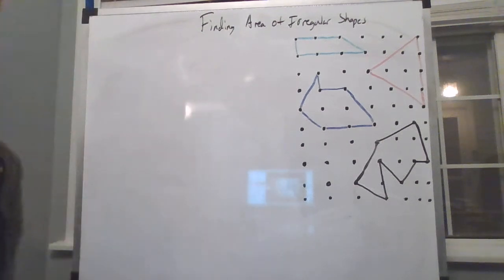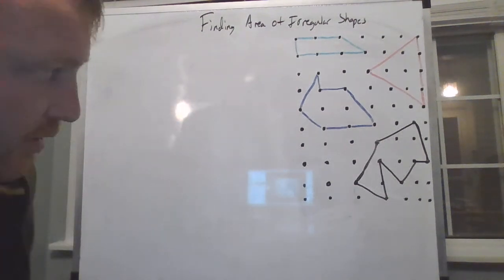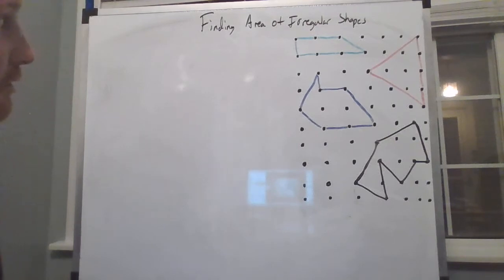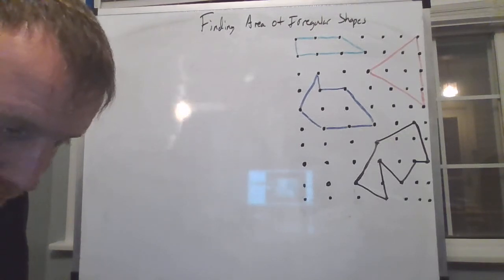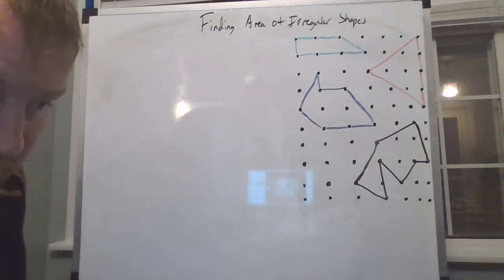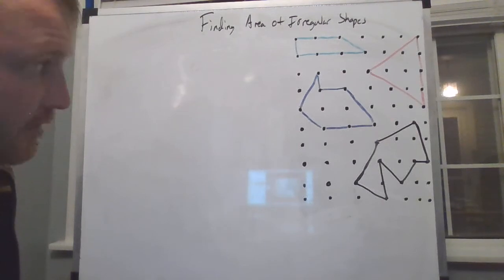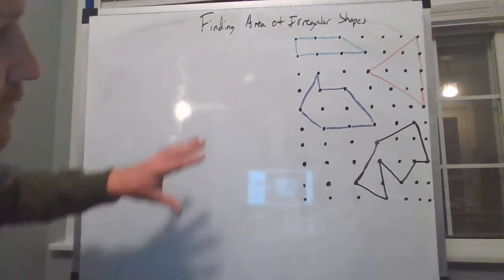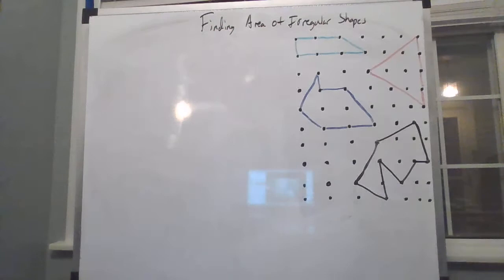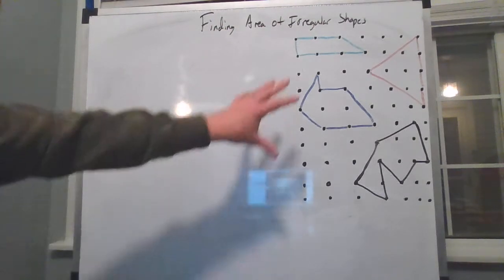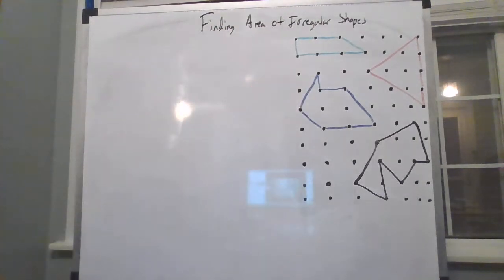Good morning. We are on section 1.3 of the investigation, 'Looking for Pythagoras.' Today I'm going to do a couple of things with you — first, we're going to look at how to find the area of these irregular shapes on the dot paper, which you'll see inside your book.